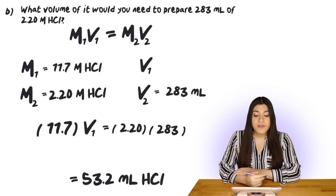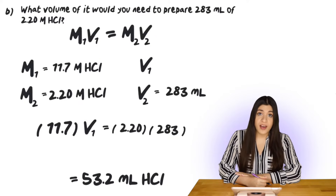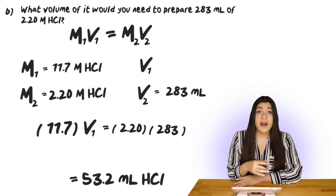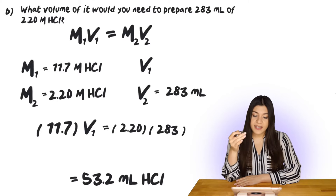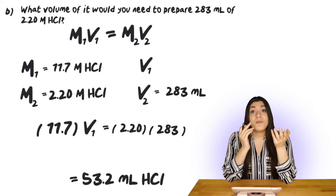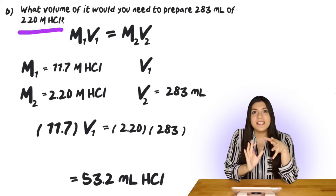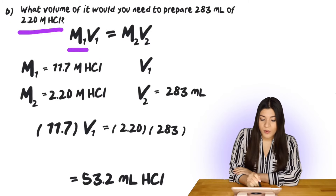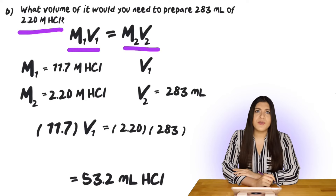Let's move on to Part B. Part B asks: what volume would you need to prepare 283 milliliters of a 2.20 molar solution of HCl? We'll use the molarity from Part A, which was 11.7 M HCl, as one of our givens. Since we're decreasing molarity while dealing with molarity and volume, that's a dilution. We use the dilution formula M1V1 = M2V2 and identify M1 = 11.7, M2 = 2.20, and V2 = 283 mL. We're solving for V1.